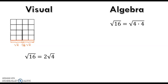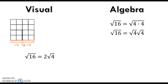We can write the square root of 16 as the square root of 4 times 4, because 4 times 4 is 16. Then we can separate those square roots — because of multiplication, you can separate your square roots. The square root of 4 is 2, so one way to rewrite the square root of 16 is 2 times the square root of 4.